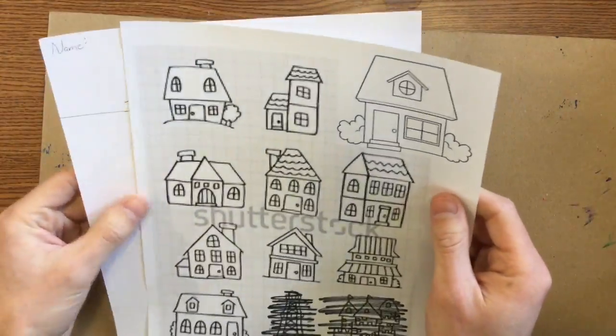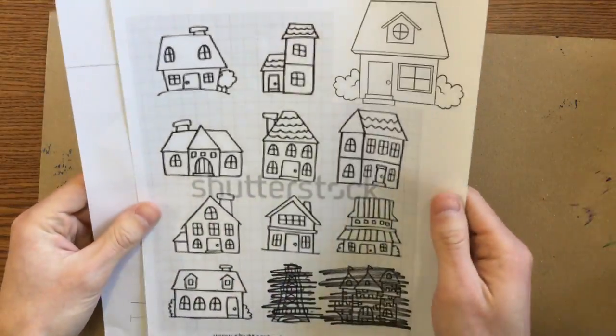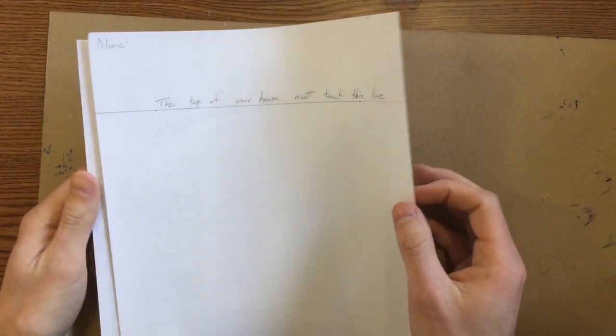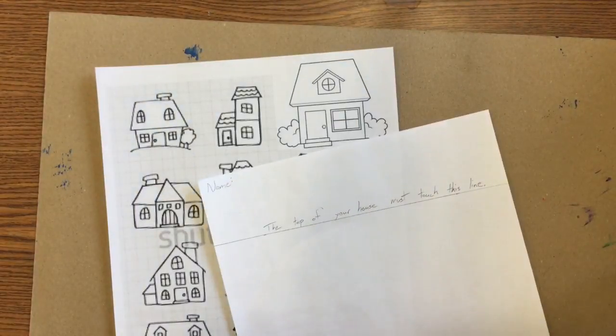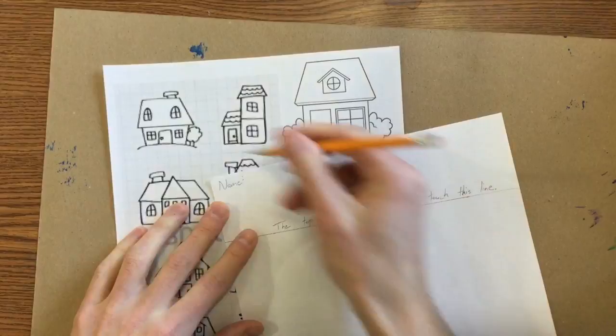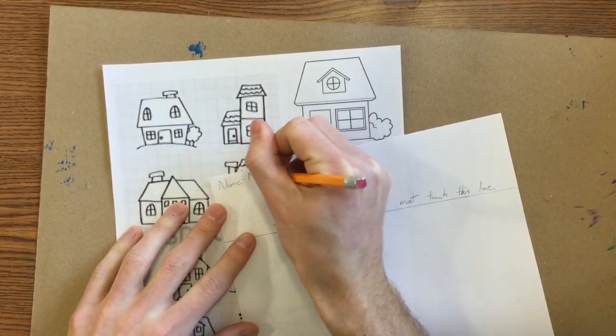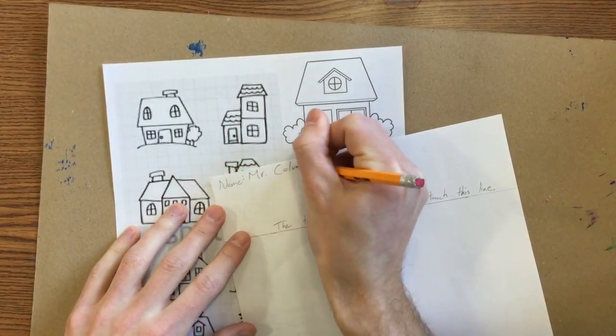Hey guys, today you're going to start off by getting two worksheets. You're going to get this one with the houses on it and this blank worksheet. You need to put your name at the top of that blank one. You can see it says name. So Mr. Calvert, whatever class you're in.